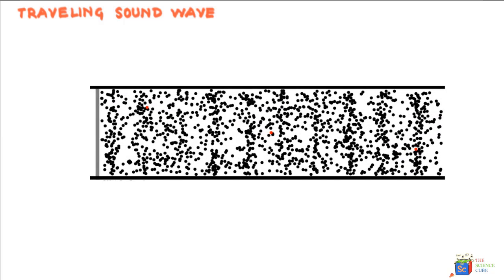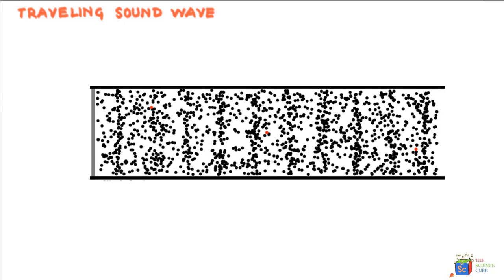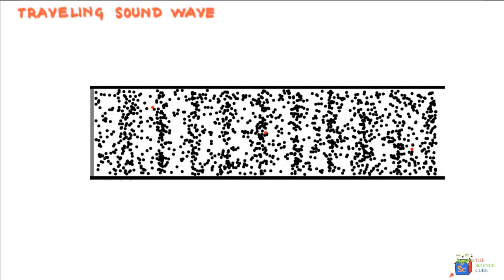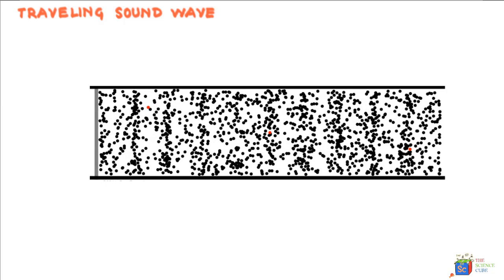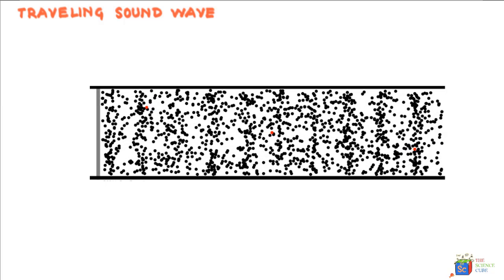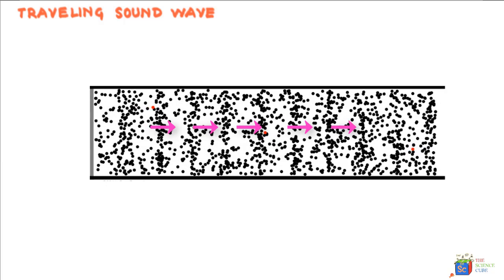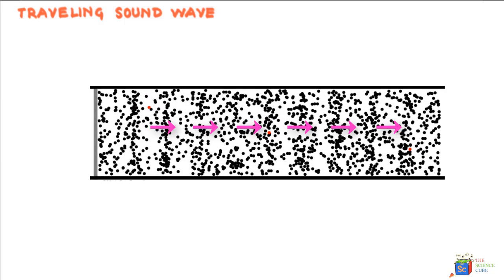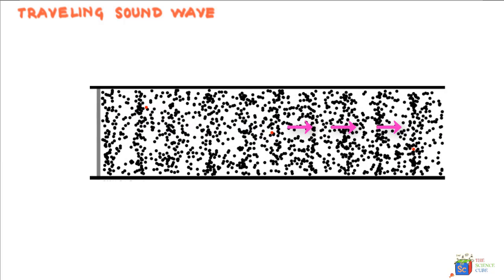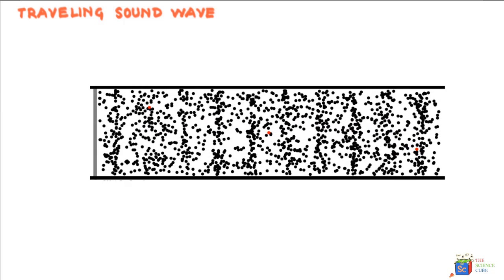You can see that the entire column has particles moving in back and forth motion about a certain mean position. And the wave we see is nothing but the movement of compressions along the pipe that creates the sound waves.